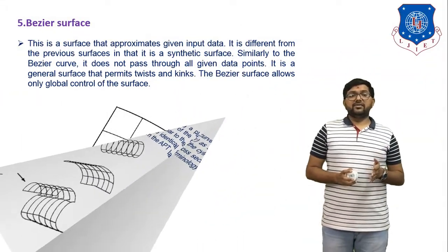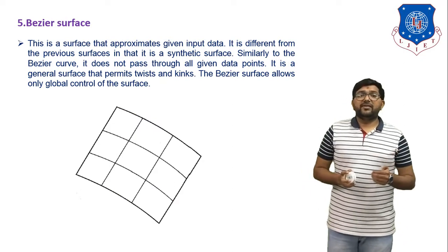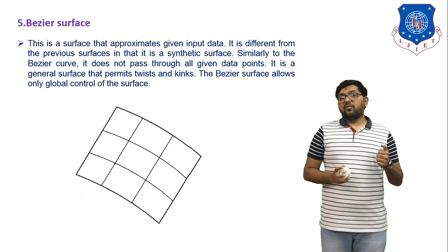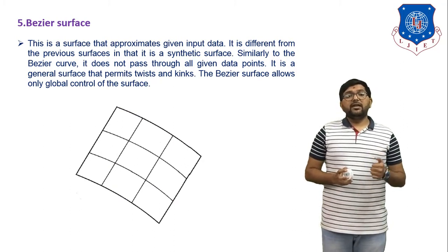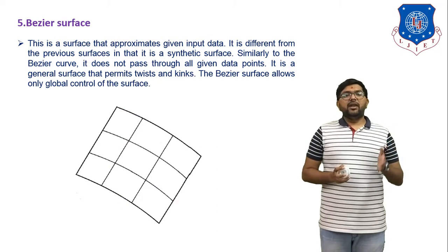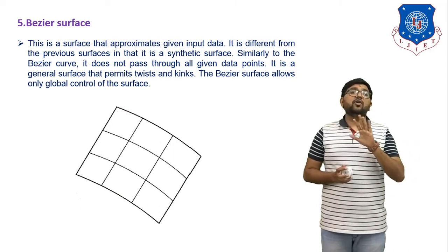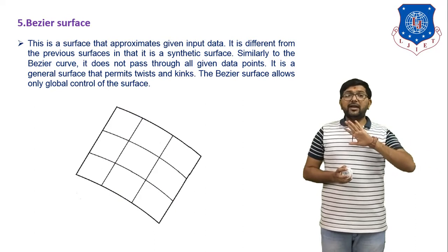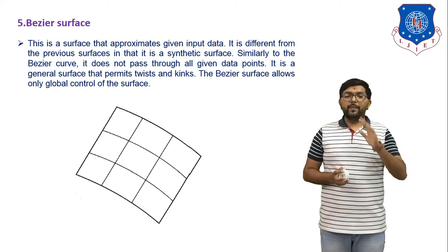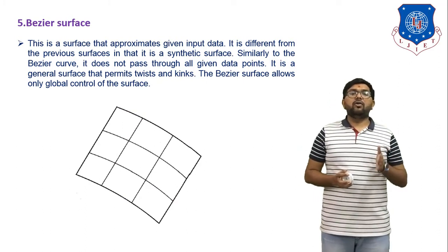All of the previous surfaces — plane, ruled, surface of revolution, and tabulated cylinder — are analytical surfaces. Now we move to synthetic surfaces. The first synthetic surface is the Bezier surface. What is a Bezier surface? It is a surface that approximates given input data. It is different from the previous surfaces in that it is a synthetic surface, similar to the Bezier curve. It does not pass through all data points; the remaining data points are considered control points that control the shape of the Bezier surface. It is a general surface that permits twist and pinch. Bezier surface allows only global control of the surface.